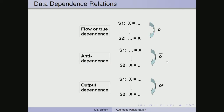To recap, we know that there are three types of dependences. For statements S1 and S2, if the definition of x is used without any modification it is a flow dependence, if the usage happens before the definition then it is anti-dependence, and if there are two definitions then it is output dependence.